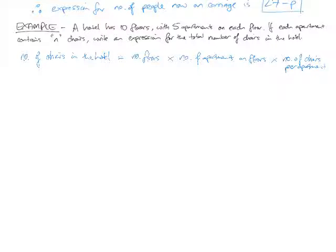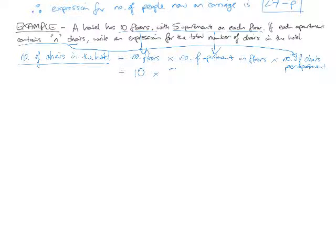We know this information: the hotel has 10 floors, it has 5 apartments on each floor, and each apartment contains n chairs. So that is the number of chairs. We're being asked to write an expression for the total number of chairs in the hotel. That's what I've made this equal to. So number of floors is 10 times by the number of apartments, 5, times by the number of chairs, which is n. We don't know that, so we're representing it as a variable.